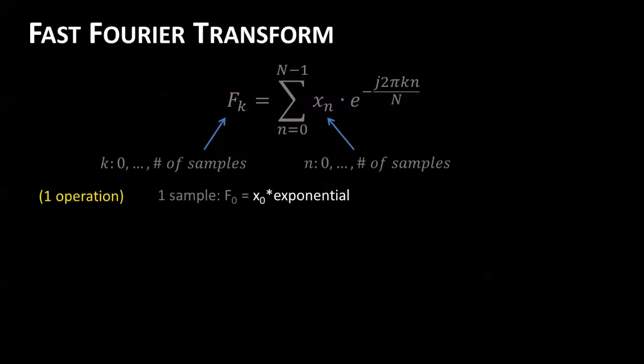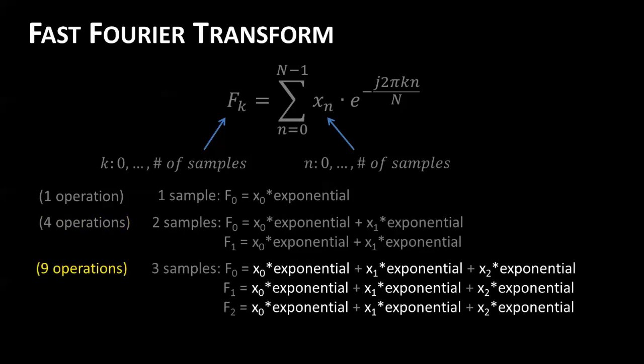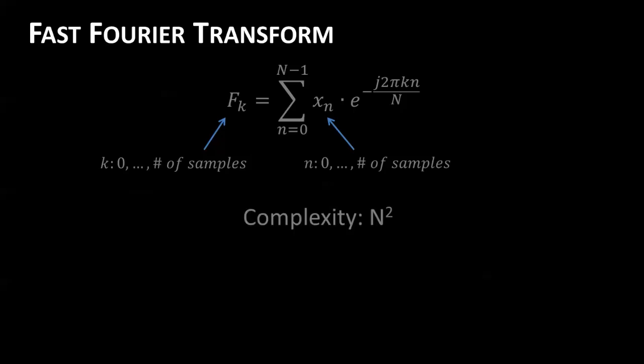If you have just one sample, you're just going to get one operation. If you have two samples, you're going to calculate two frequency bins with two values sum together in each one for four operations. And with three samples, you're going to get three frequency bins with three in each for nine. So the complexity, like I said, is n squared.